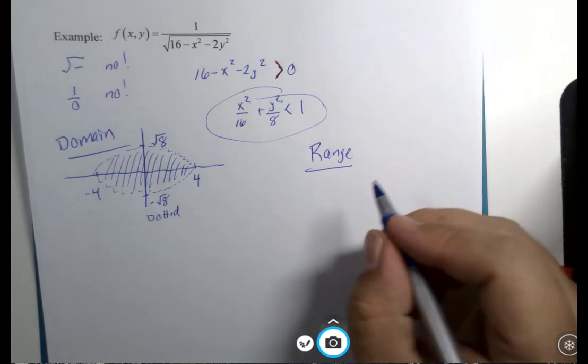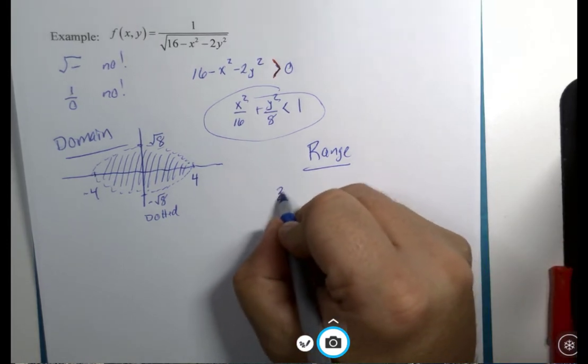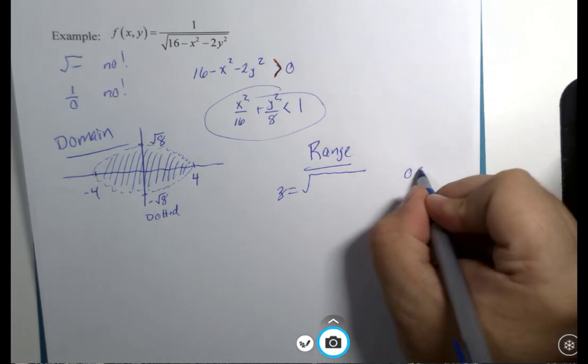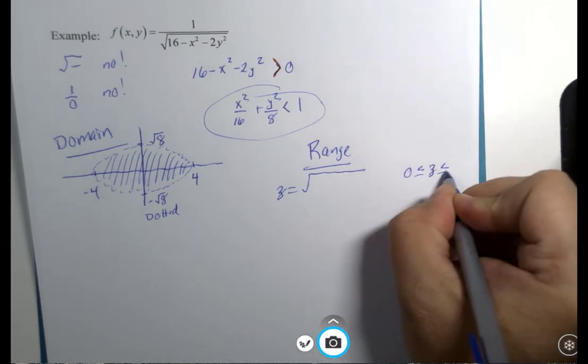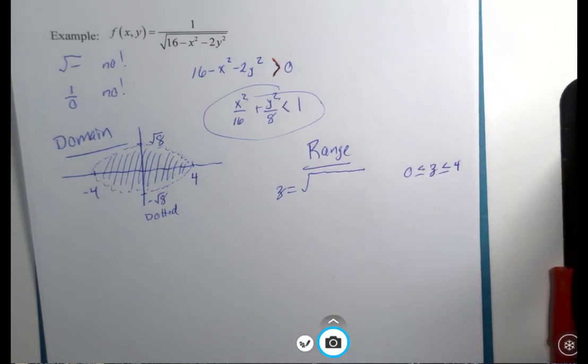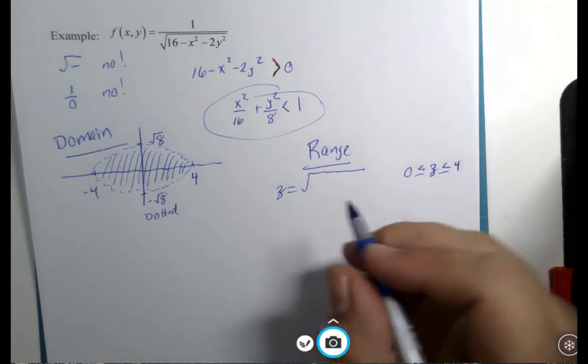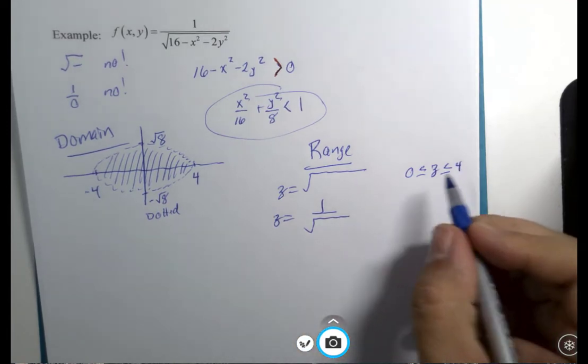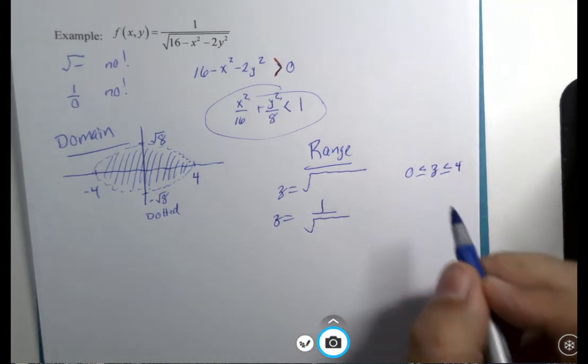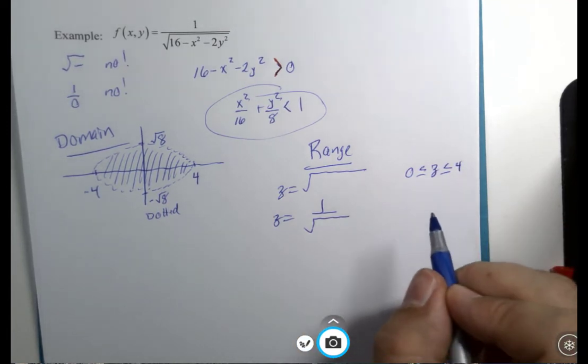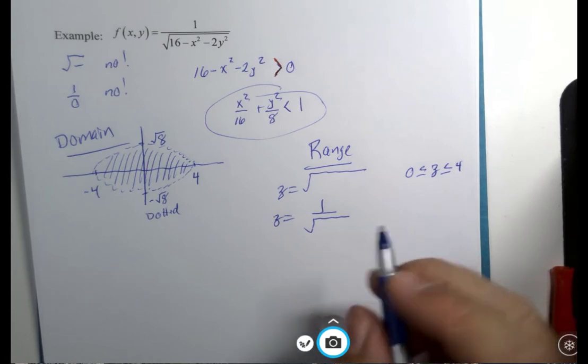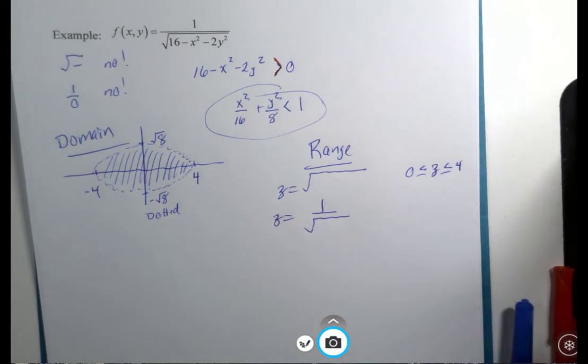Now what's going on with the range? This one's fun. So previously, this version, the range was from 0 to 4. What happens if we do the reciprocal of that? What happens to this over here?